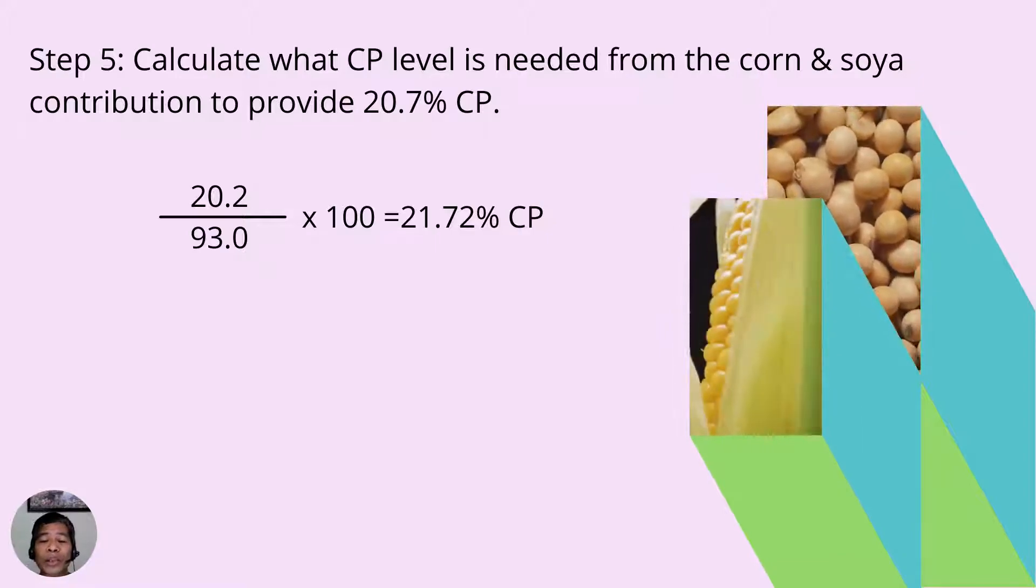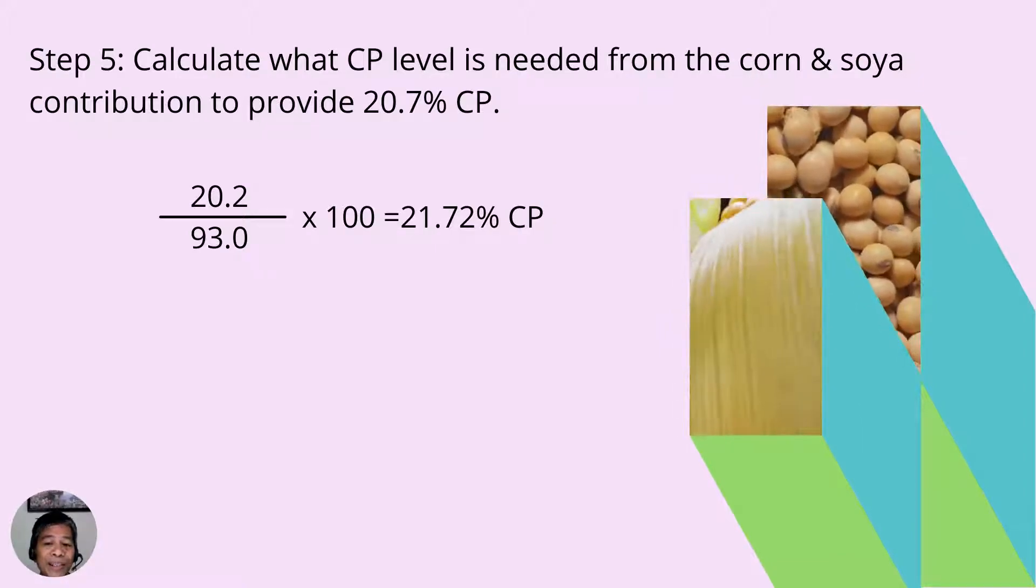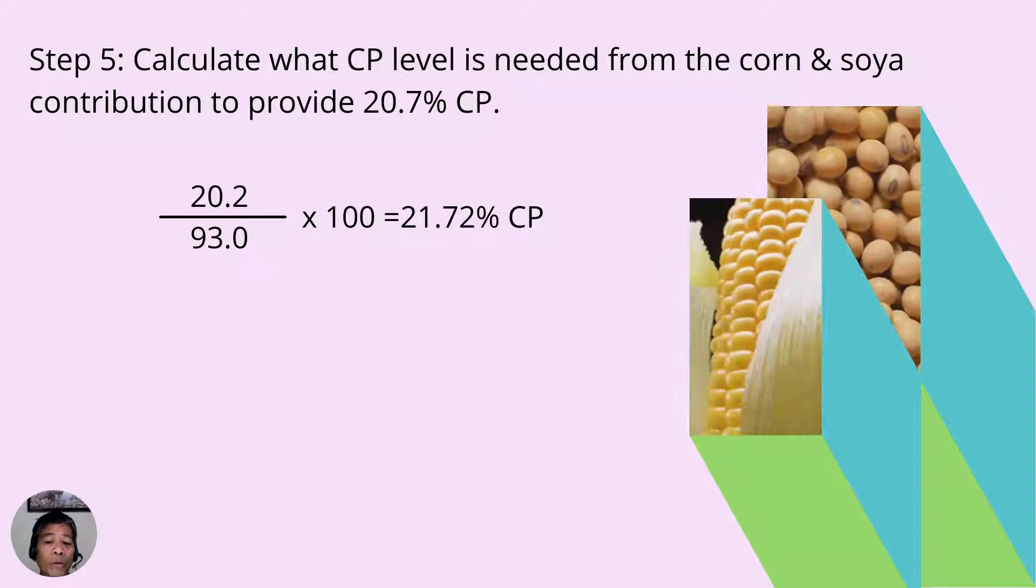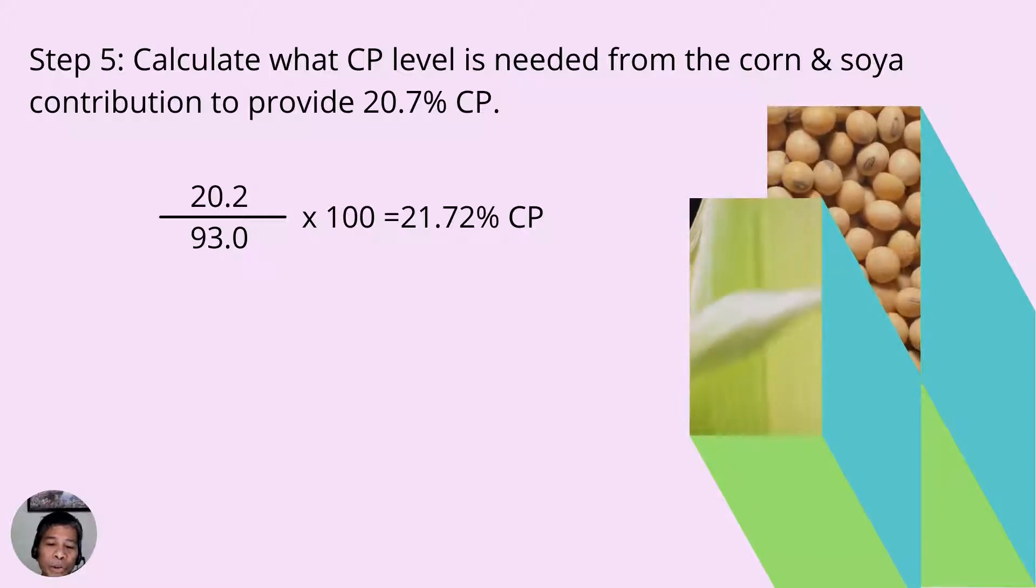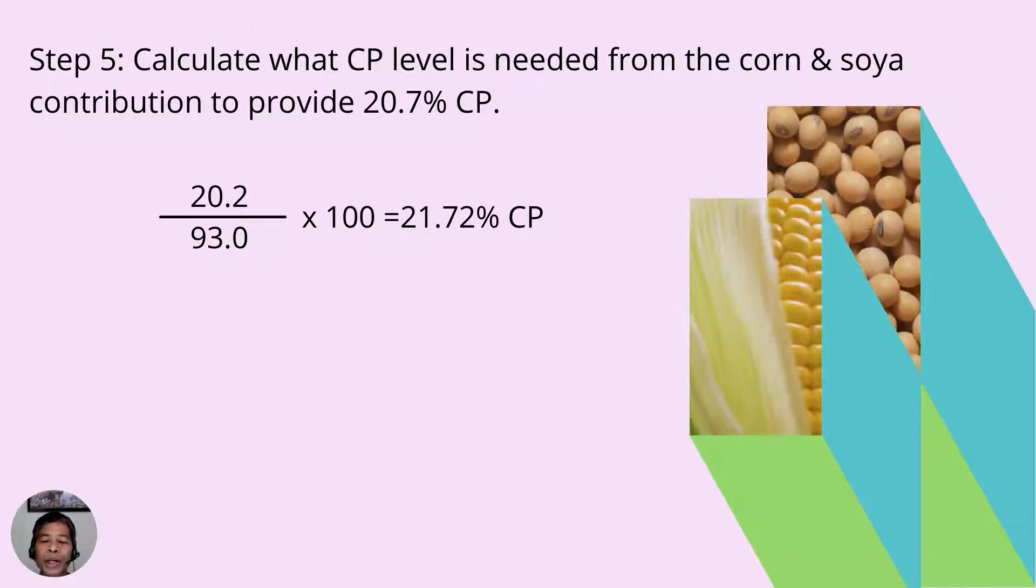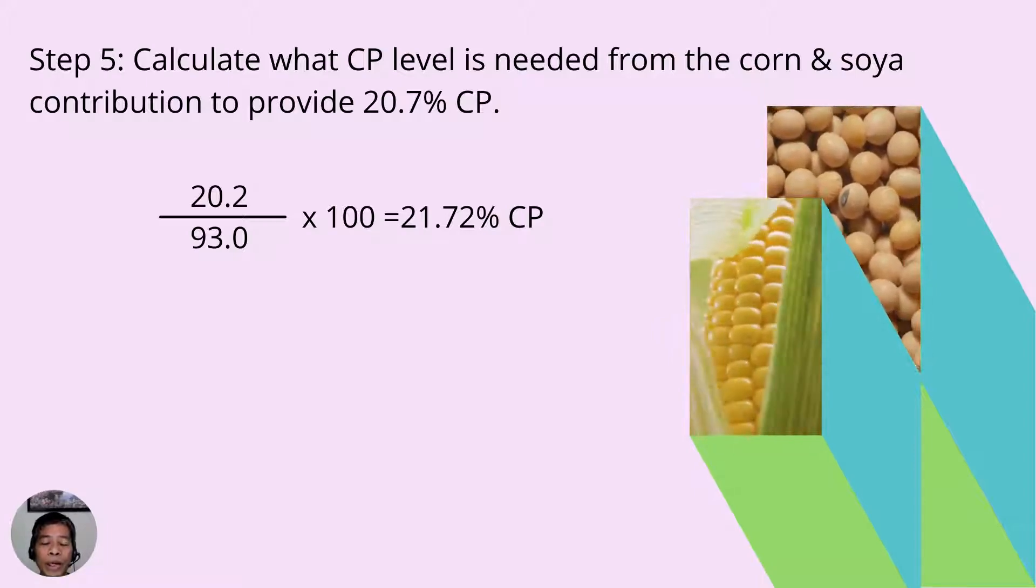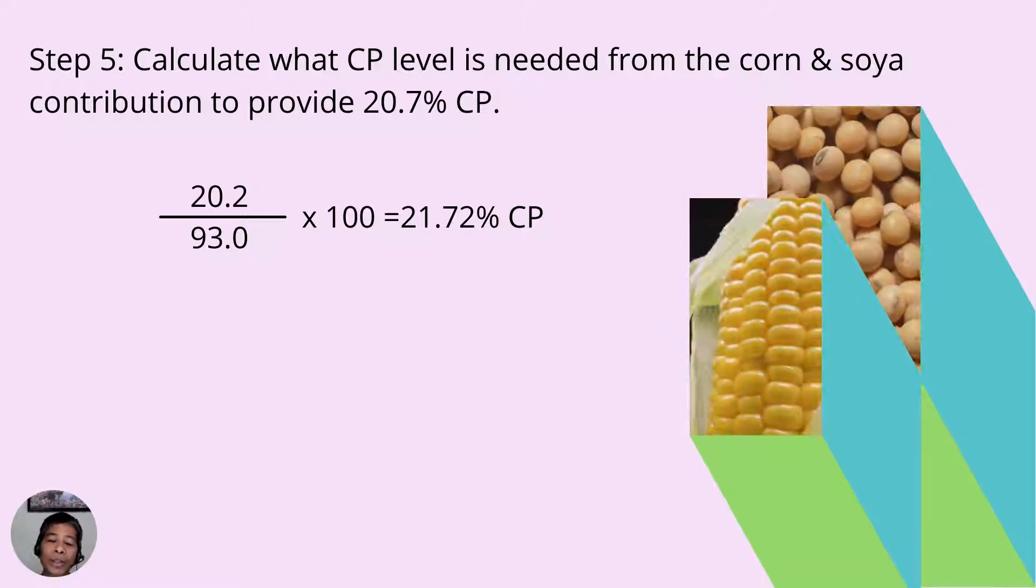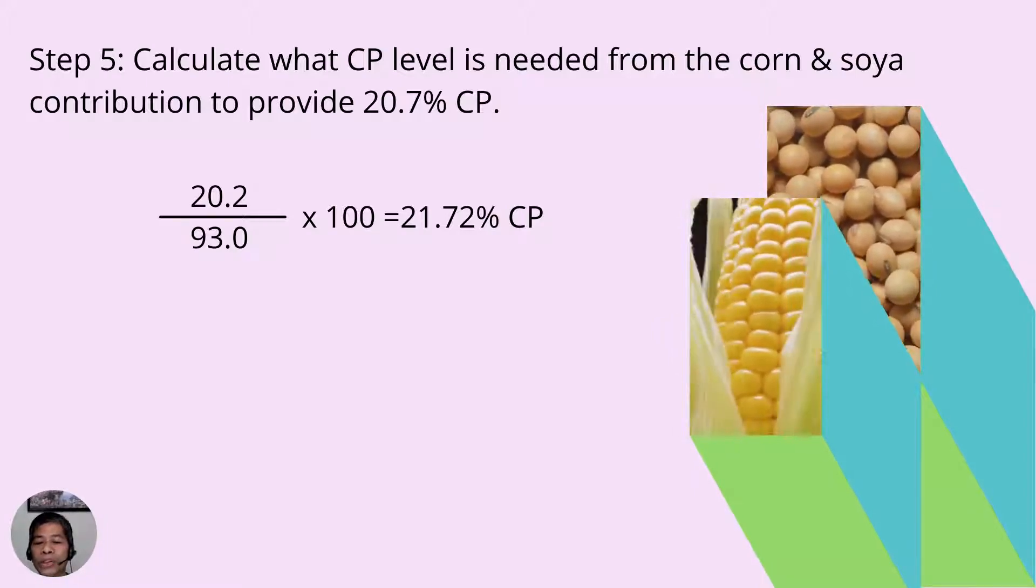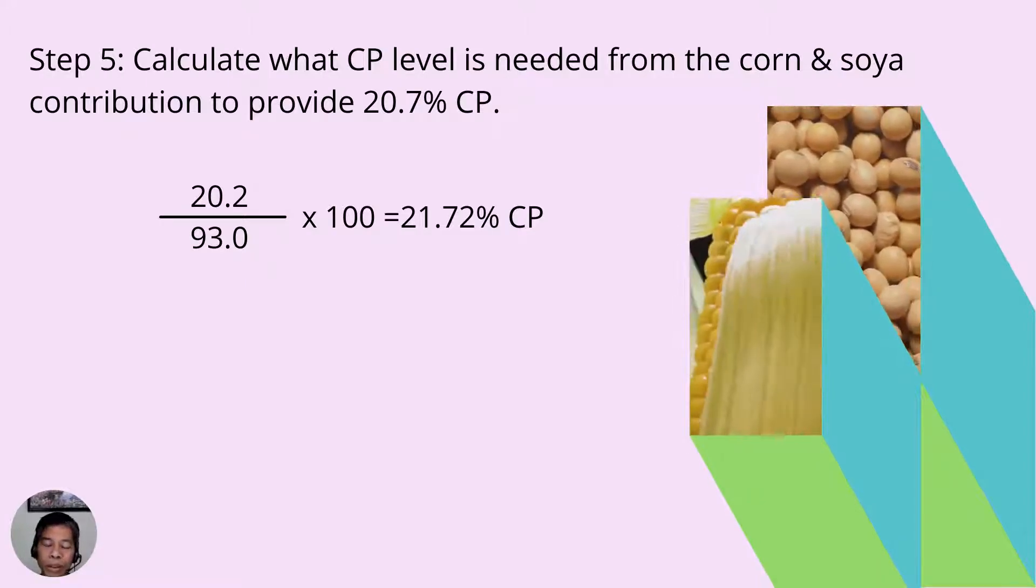But since 20.2% CP is the remaining amount of protein for a 100% mixture, we need to express this in terms of the remaining 93%, which is basically the combination of corn and soybean meal. To do that,